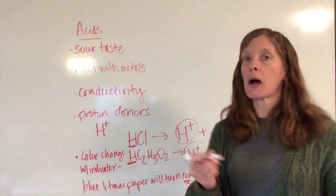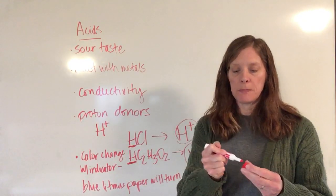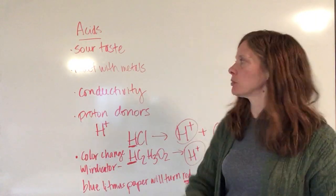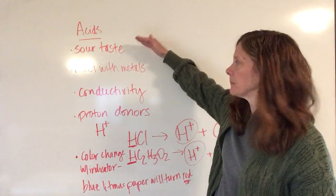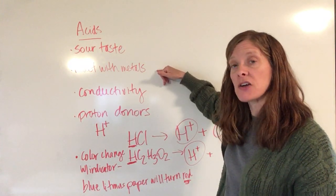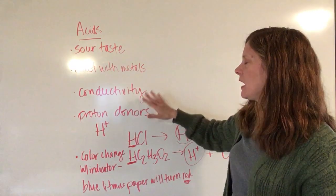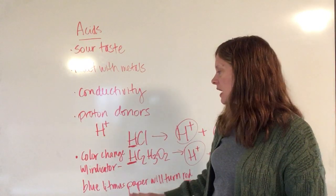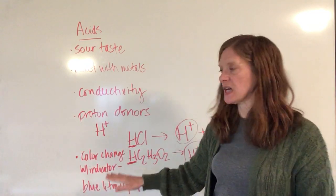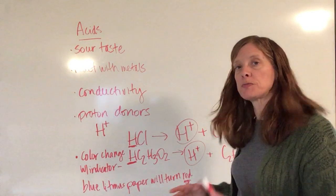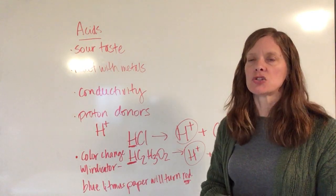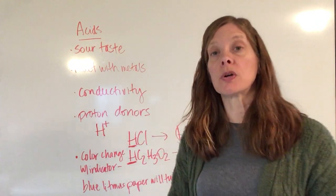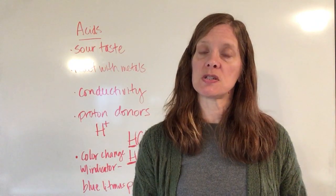I used a red marker to write that up on the board to help remember that blue litmus paper turns red in the presence of an acid. So we've got five characteristics: a sour taste; reacts with metals forming hydrogen gas; conducts electricity; they are proton donors; and they change color with indicators — specifically, blue litmus paper turns red. Make sure you know these five characteristics of acids, and tomorrow we will compare them with the characteristics of bases.